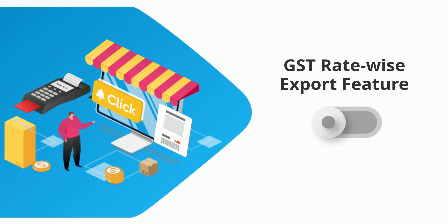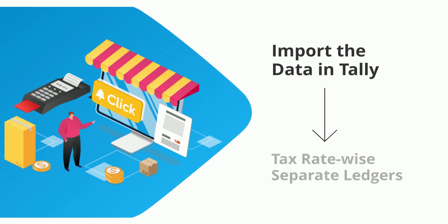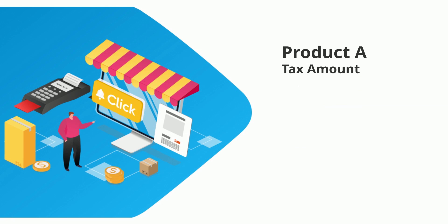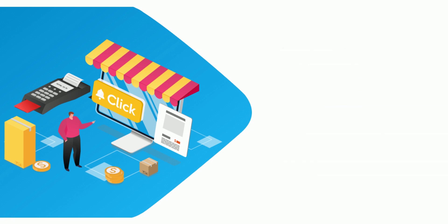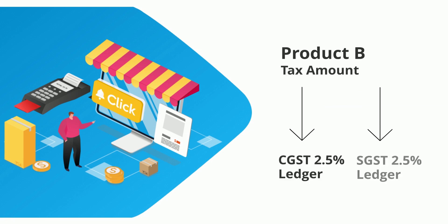If we want to maintain separate tax rate-wise ledgers in Tally, this functionality can be useful. If we enable this feature, whenever we import the data in Tally, it will automatically create tax rate-wise separate ledgers and their respective amounts will be reflected in them. So for product A, the tax amount will reflect in CGST 9% and SGST 9% ledgers. And for product B, the tax amount will be reflected in CGST 2.5% and SGST 2.5% ledgers.